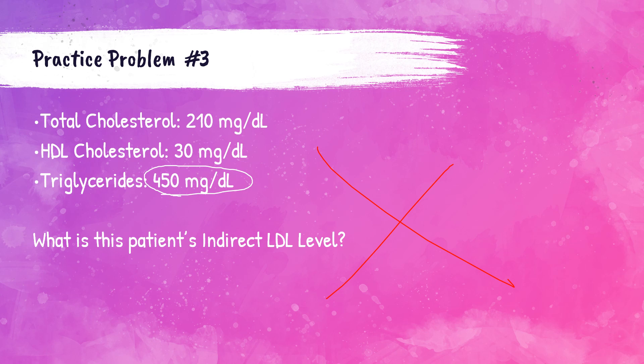So the patient cannot have their indirect LDL calculated. Does that mean the patient just doesn't get an LDL level? No, of course not. It just means we can't perform the calculation. What we would have to do is a direct LDL measurement — the analyzer actually has to directly measure the LDL level rather than relying on the calculation. Those are three practice problems for indirect LDL calculations.